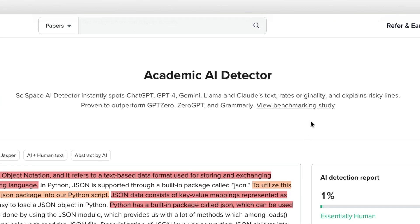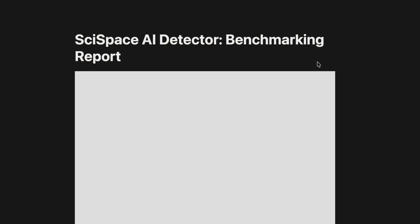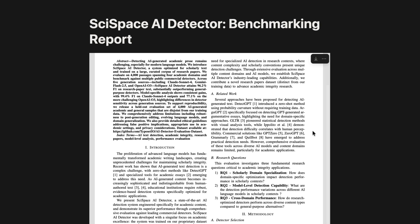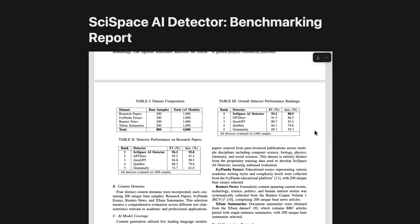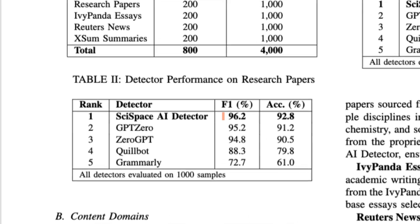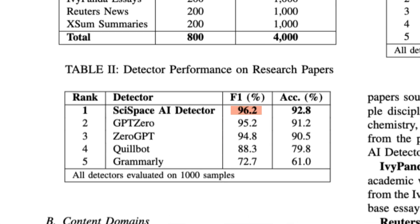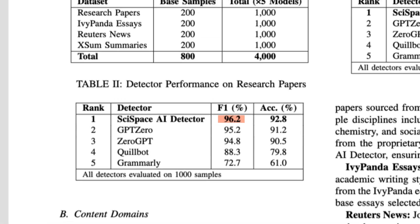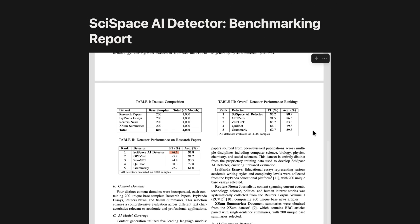In fact, we conducted a benchmarking study and SciSpace achieved an F1 score of 96.2%, demonstrating one of the highest accuracy levels among all tools evaluated.